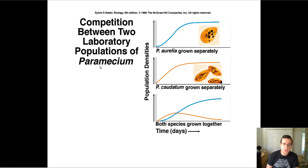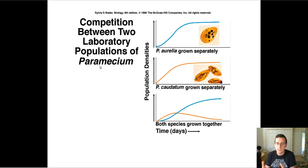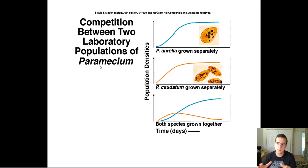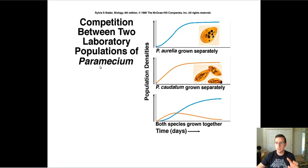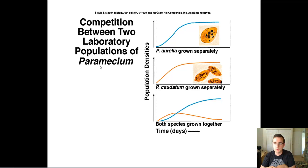Notice that the population of caudatum did not completely die off. That means there are some areas of that little miniature ecosystem which the Aurelia doesn't care for, and within those areas the caudatum still gets to exist. So niche is the role and the place of the organism within the environment, dependent on a variety of factors. Sometimes animals' niches overlap, and when they do, they have to fight for resources. If they overlap in every single way, only one of them can possibly survive — that's the competitive exclusion principle.